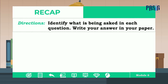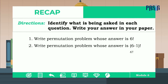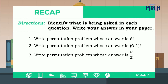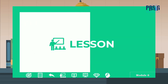Identify what is being asked in each question. Write your answer in your paper. Number one: write a permutation problem whose answer is 6 factorial. Number two: write a permutation problem whose answer is (6 minus 1) factorial divided by 2 factorial. Just write your answer in your notebook and we will check it later. Now let's proceed to the lesson.